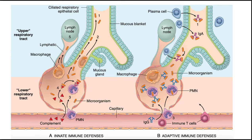Much more commonly, lifestyle choices interfere with host immune defense mechanisms and facilitate infections. Cigarette smoke compromises mucociliary clearance and pulmonary macrophage activity, and alcohol impairs neutrophil function as well as cough and hypoglottic reflexes, thereby increasing the risk of aspiration.